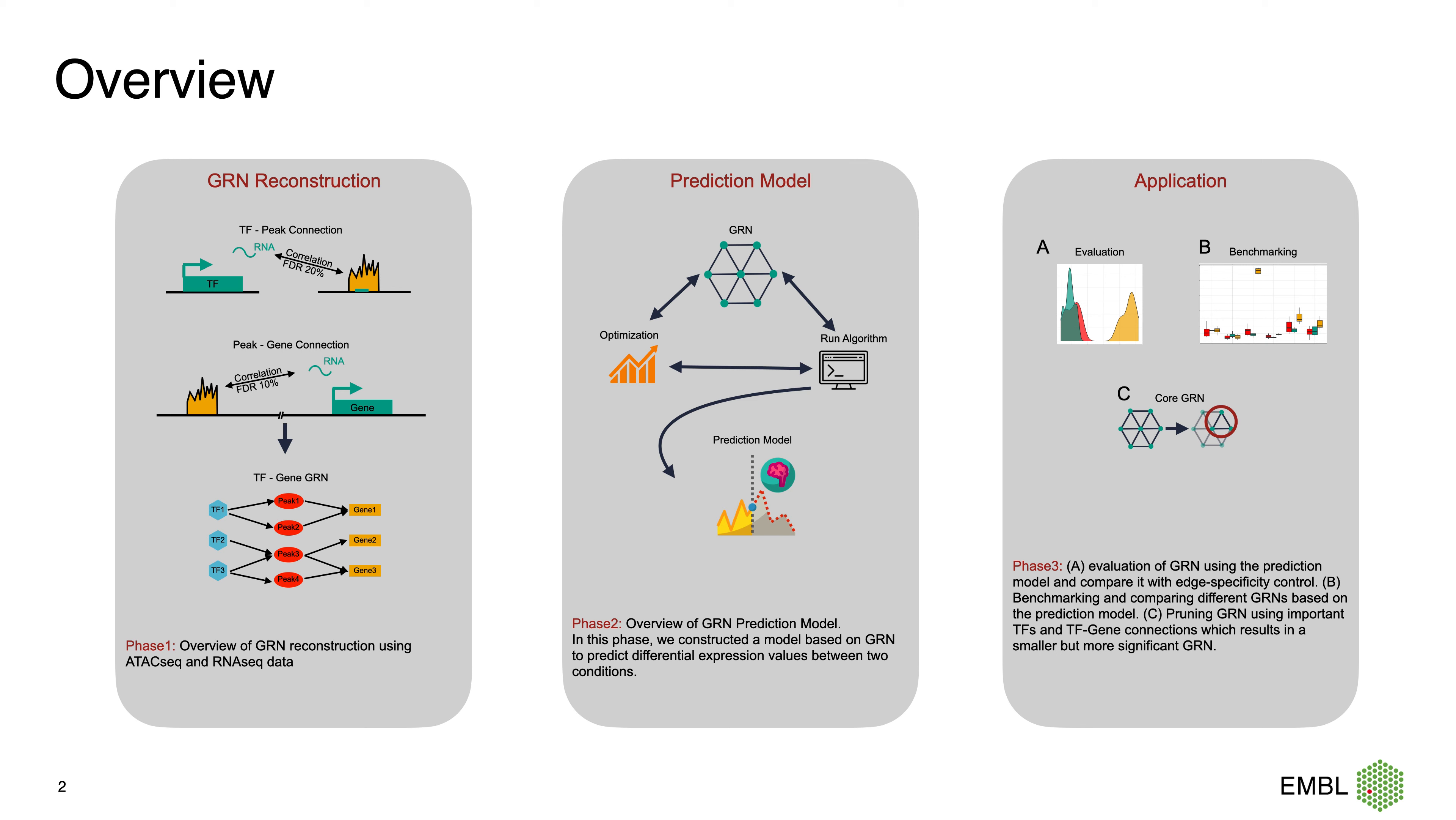First, the GRN reconstruction. You can see in the left panel, the network has three types of nodes: transcription factor, regulatory elements, and genes.